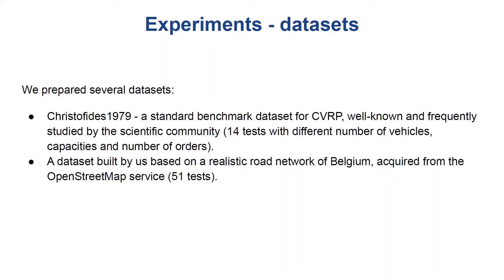We prepared several datasets. Christofides 79, a standard benchmark dataset for CVRP, well-known and frequently studied by the scientific community. It contains 14 tests with different number of vehicles, capacities, and number of orders, and a dataset built by us based on a realistic road network of Belgium, acquired from the OpenStreetMap service. It contained 51 tests.